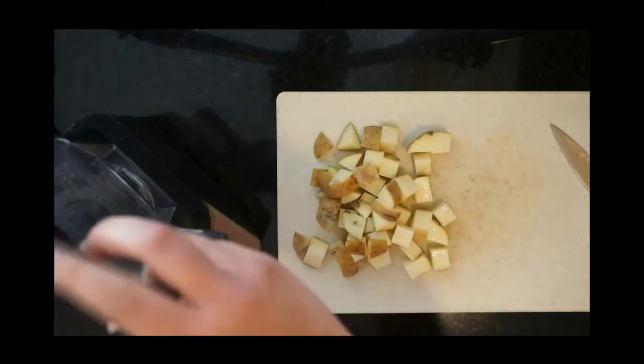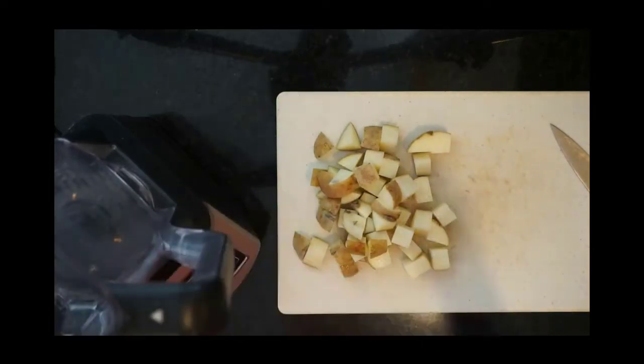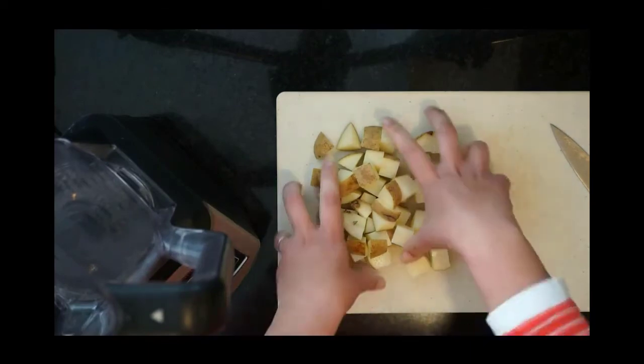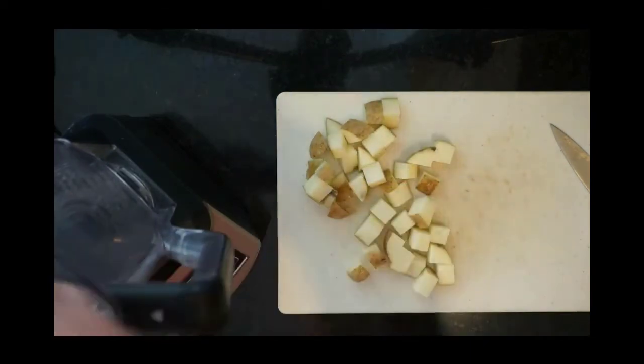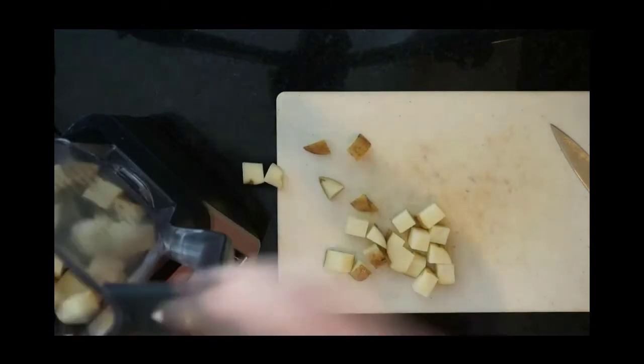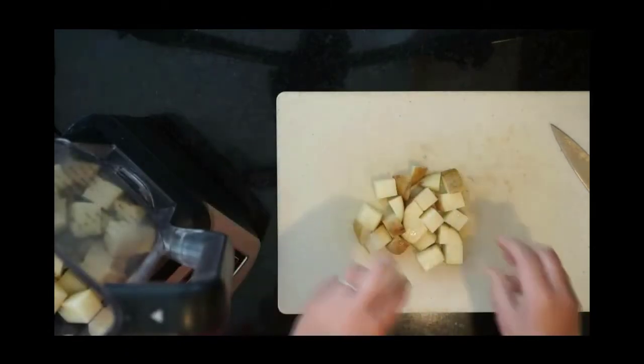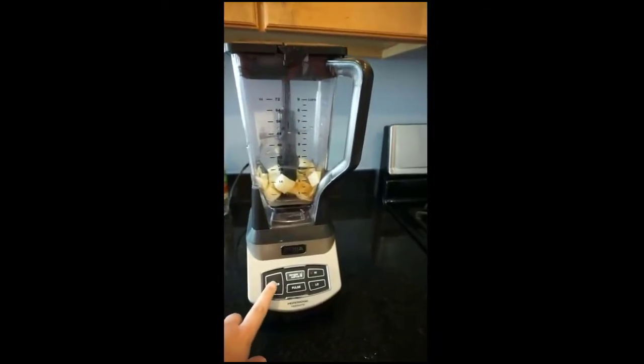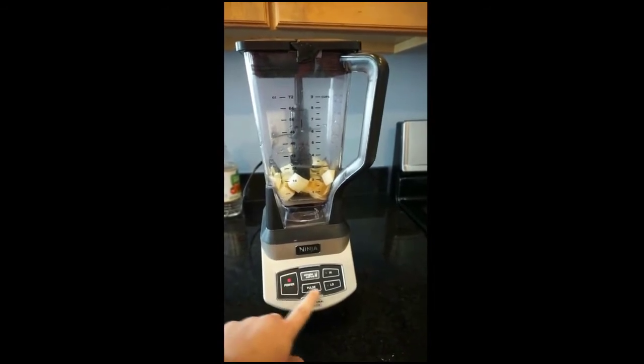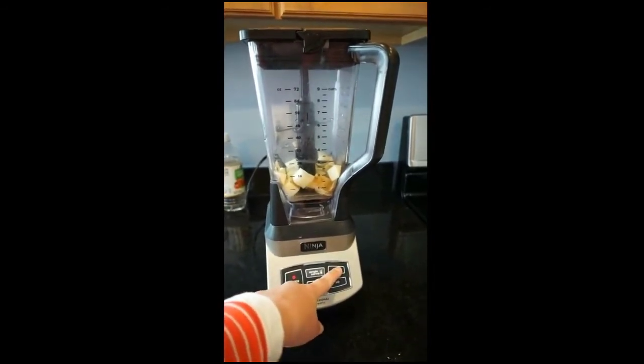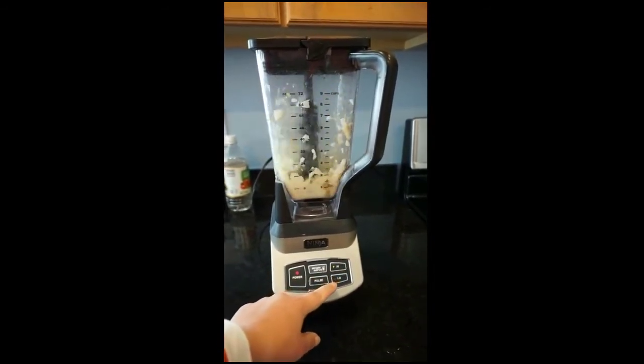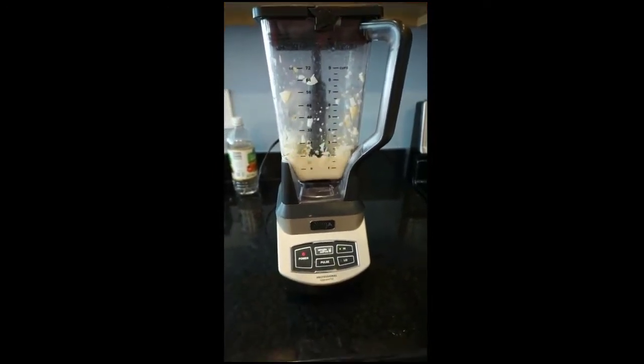Then we'll put half of those into our blender. The directions tell you to blend until it looks like oatmeal, so you can watch to see what that consistency is.